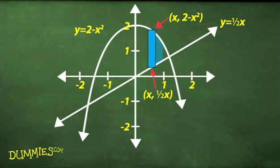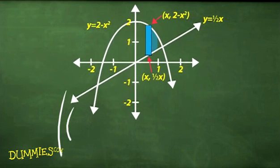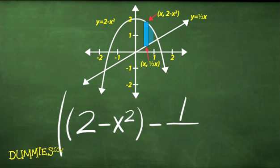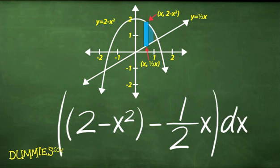Find the area between y equals 2 minus x squared and y equals one half x from x equals 0 to x equals 1. To get the height of the representative rectangle, subtract the y-coordinate of its bottom from the y-coordinate of its top. That's 2 minus x squared minus one half x. Its base is the infinitesimal dx.